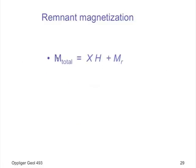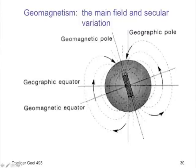Just a note about remnant magnetism: total magnetization is the magnetic susceptibility k times the applied field H, plus you've also got to add the remnant magnetism.